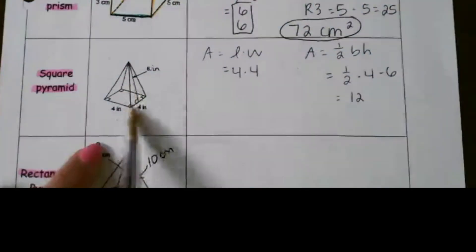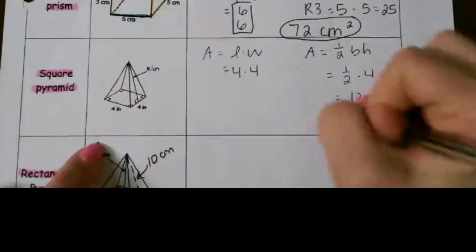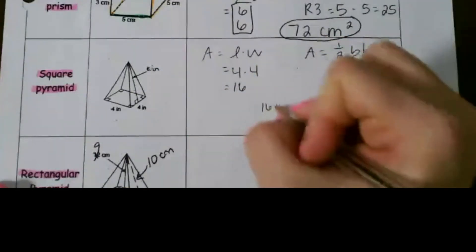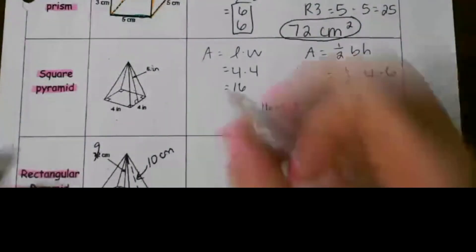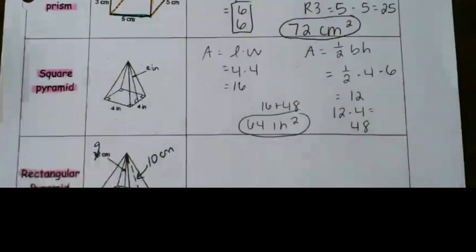Again, since this is a square on the bottom, all four triangles would be the same, so I can multiply that by 4. So with 16 as our square, we add these two together, and we would get 64 square inches for our final answer.